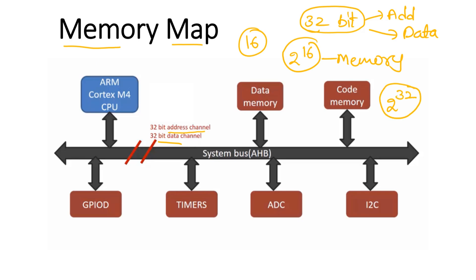You can allocate up to 2 power 32 addresses for the memory region, which means 2 power 32 is nothing but 4 gigabytes. 4 gigabytes of memory you can allocate by using this address bus. I will give you one small example of how this memory map is used for reading or writing data in the processor.